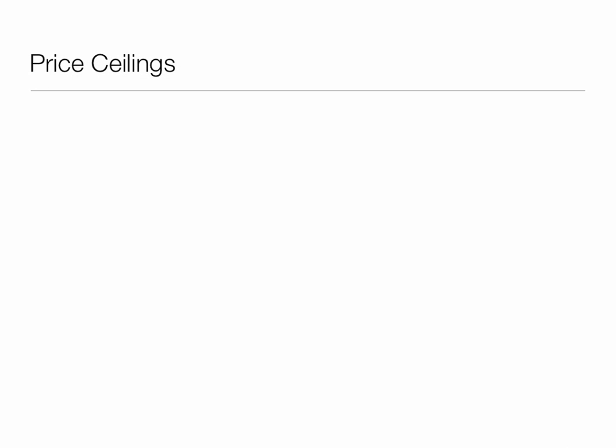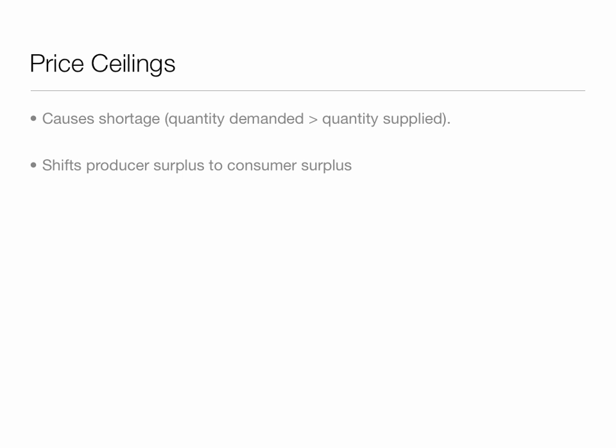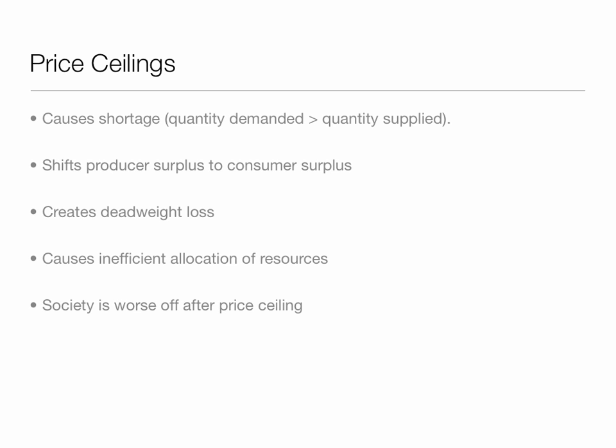With price ceilings, quantity demanded is greater than quantity supplied, causing a shortage. It shifts producer surplus to consumer surplus, creates a deadweight loss to society, causes inefficient allocation of resources, and society is worse off after a price ceiling.